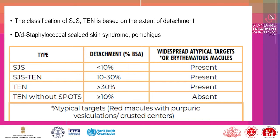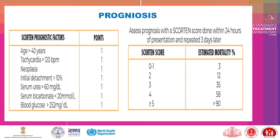The classification of SJS/TEN is based on the extent of skin detachment. Diagnosis: differential includes staphylococcal scalded skin syndrome and pemphigus. Assess prognosis with the SCORTEN score, done within 24 hours of presentation and repeated at 3 days. Prognostic factors include age greater than 40 years, tachycardia greater than 120 beats per minute, and presence of neoplasia.